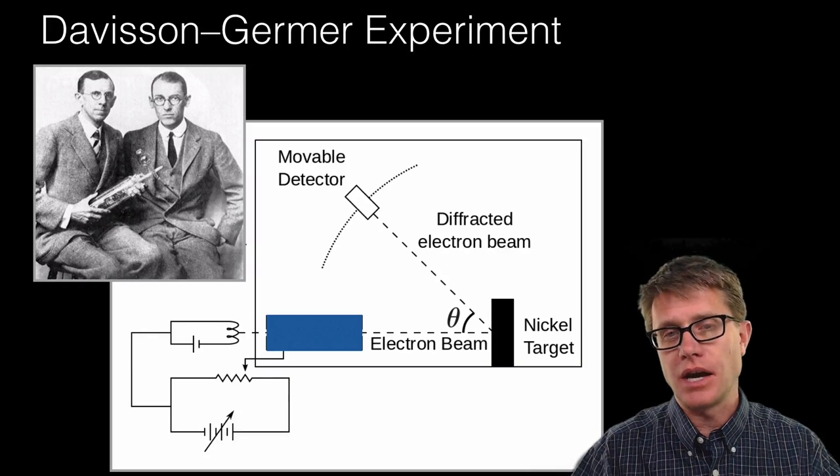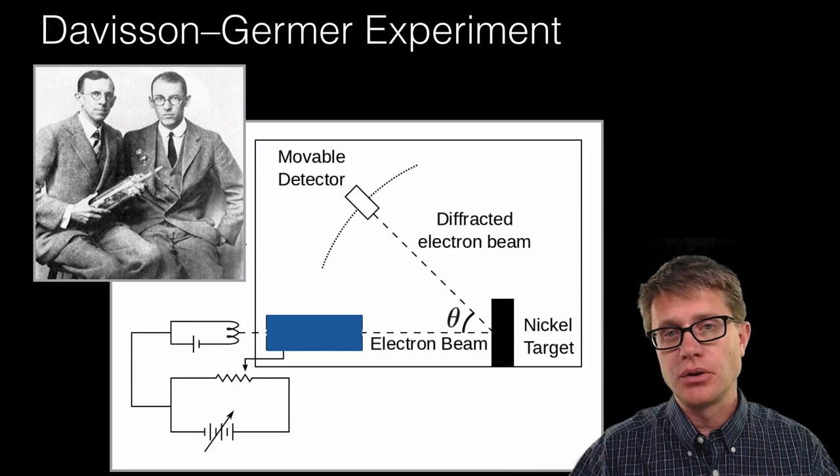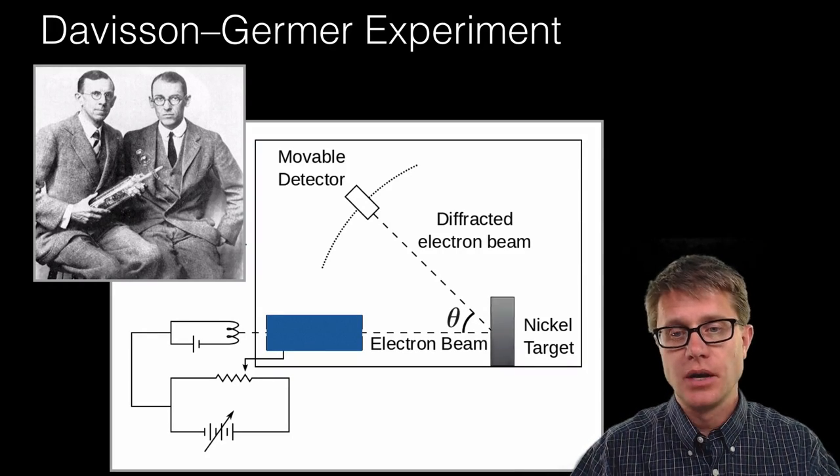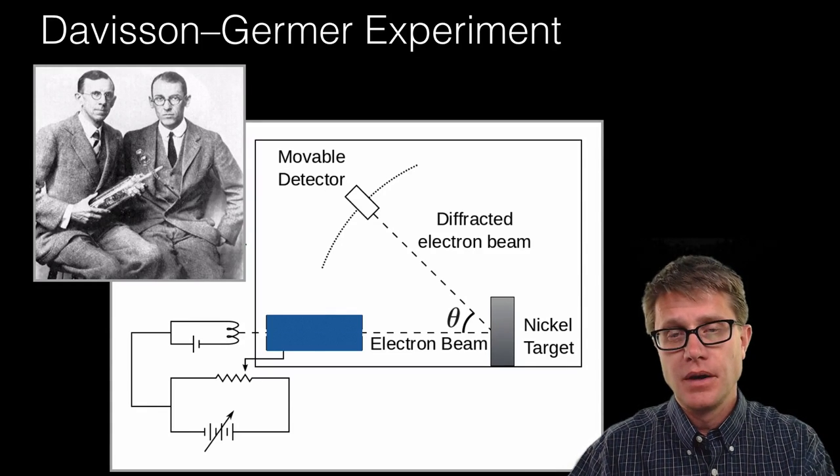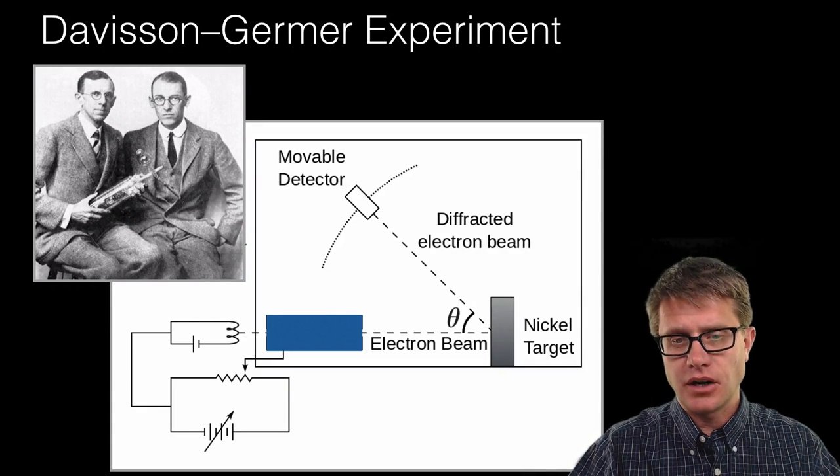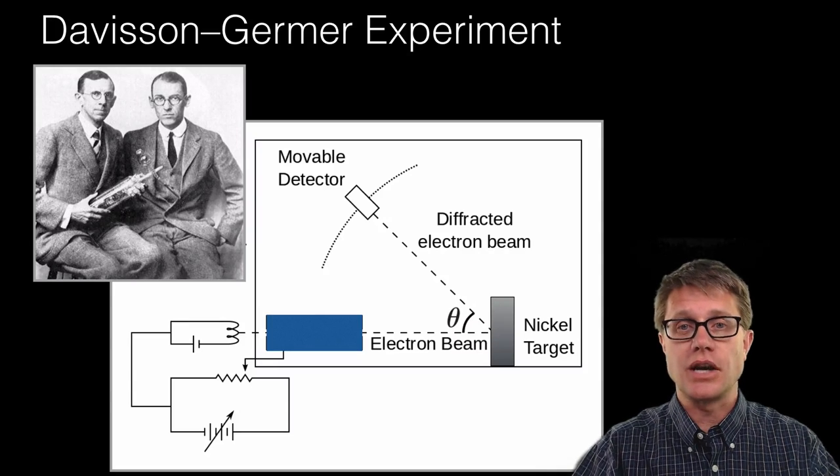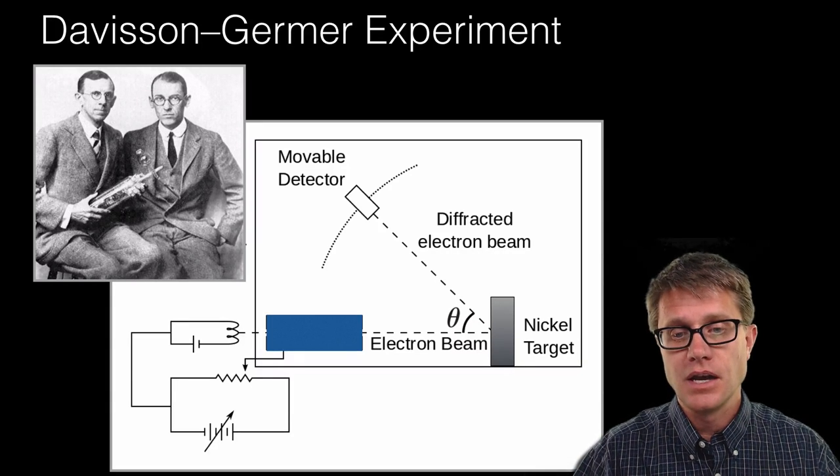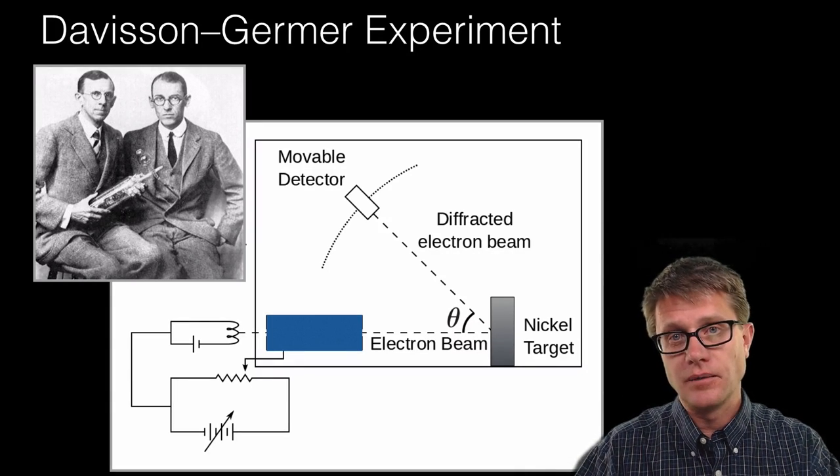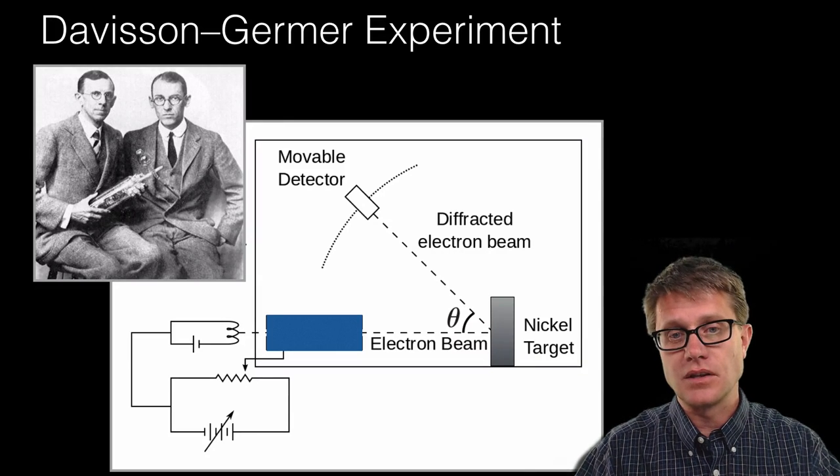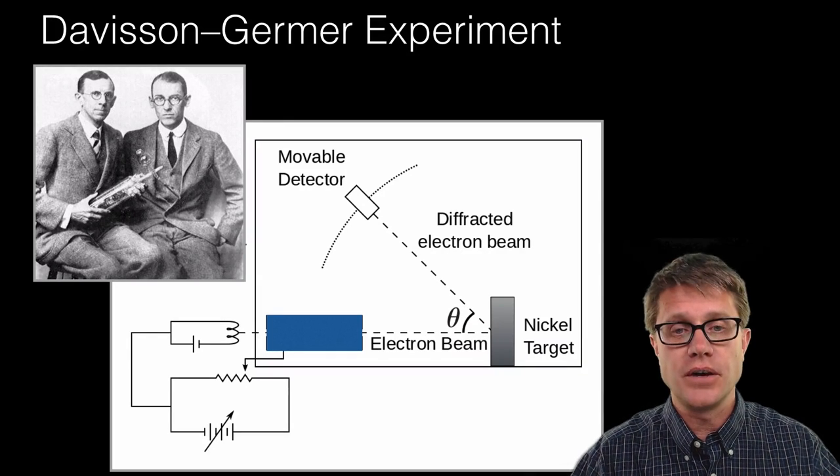And so inside a vacuum chamber they had an electron gun that would produce an electron beam that would strike a nickel target. Now what was interesting is that nickel target built up some oxidation on it. So they put it in an oven. And inadvertently what they did is created one large crystal, which actually helped them get good results. As the electron hit the nickel it would then scatter the electrons. And the electrons they hoped would interfere with one another.